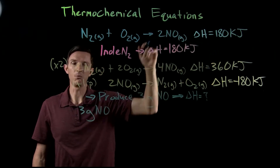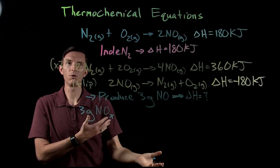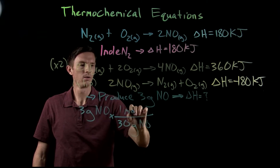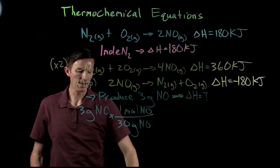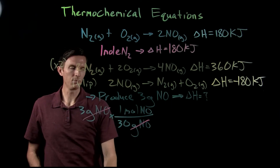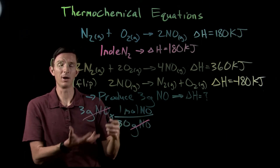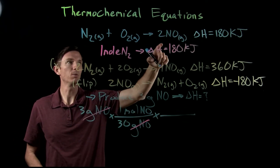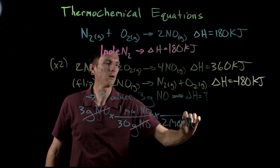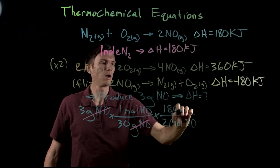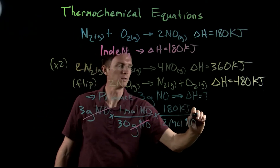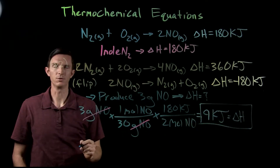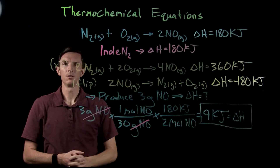We start with three grams of NO, but we only know the relationship between enthalpy and molar amounts. So, just like converting between grams and moles for reactants and products, we first convert our three grams of NO to moles. Then we apply the stoichiometric ratio from our reaction: two moles of NO gives an enthalpy change of 180 kilojoules. After doing those conversions, the enthalpy change comes out to 9 kilojoules.